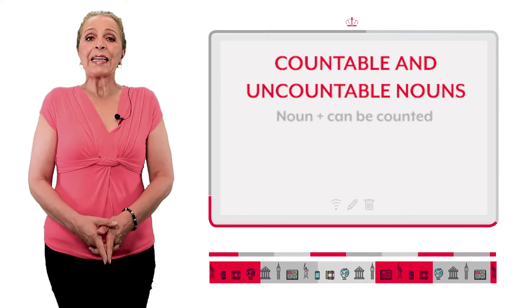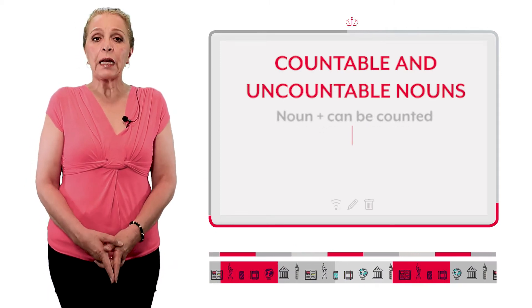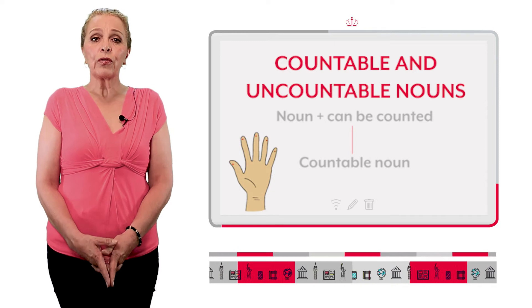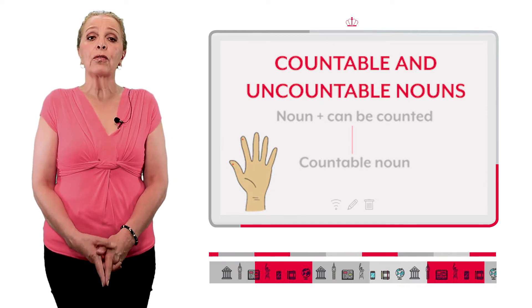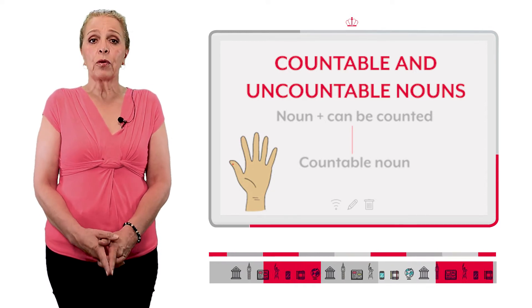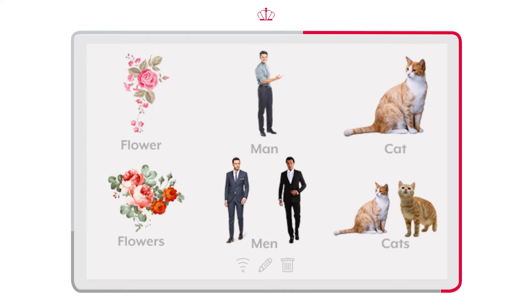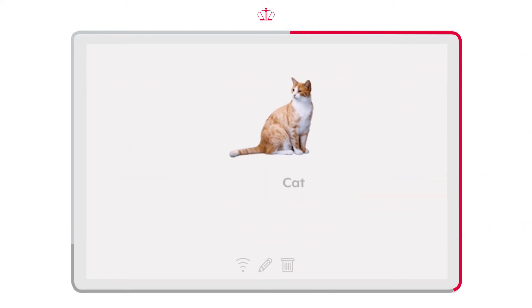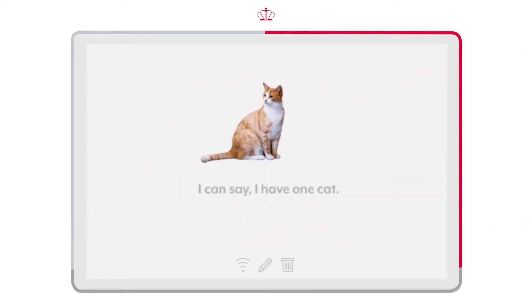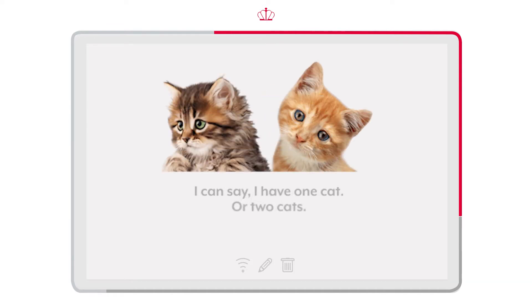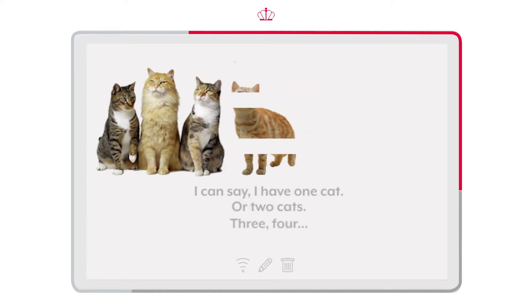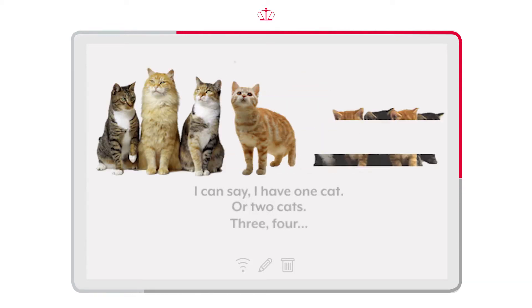A noun that can be counted is called a countable noun. Un sustantivo que se puede contar es un sustantivo contable. For example, flowers, man, or cats. Por ejemplo, gatos. I can say I have one cat, or two cats, three, four, fifty cats.